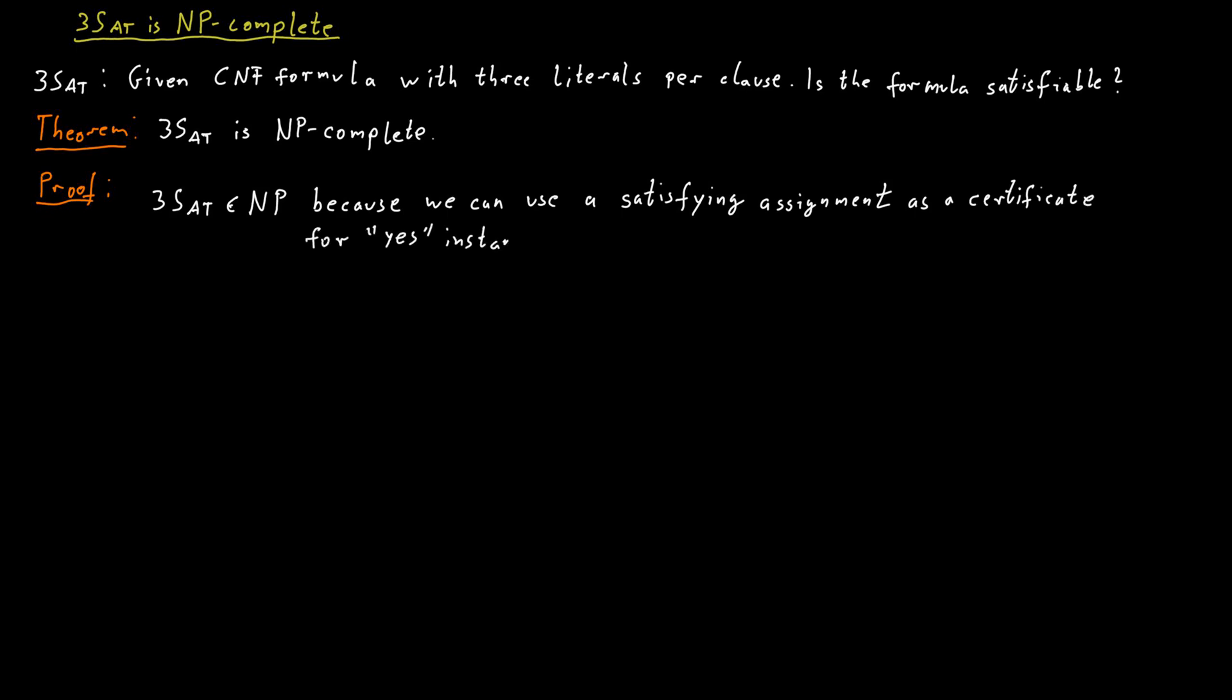And then a certifier can just plug in those values into the variables and evaluate the formula and check that the formula is indeed true. And clearly this works in polynomial time. The certifier just needs to plug in the values into this Boolean formula and evaluate the formula. So 3SAT is in NP.